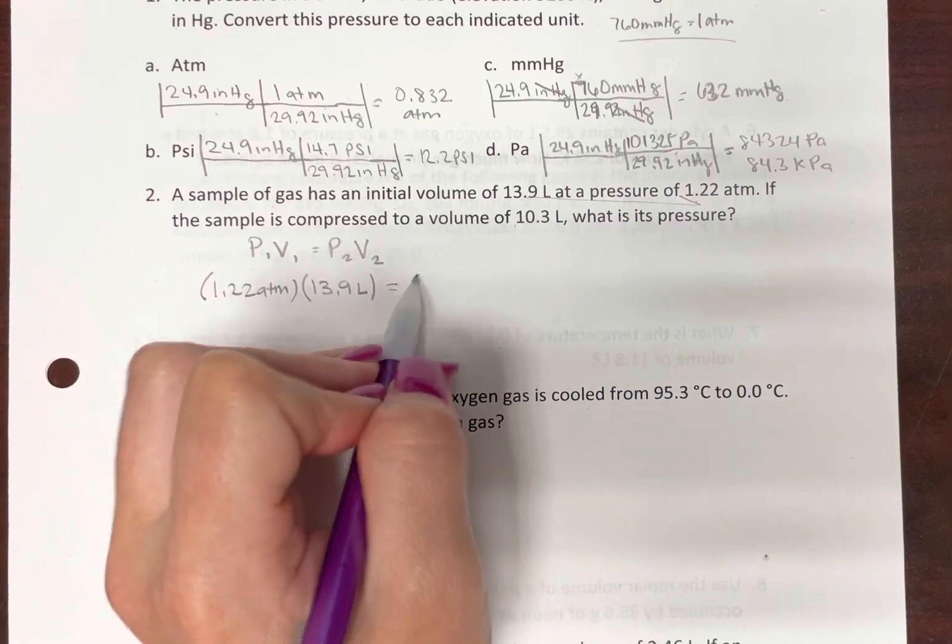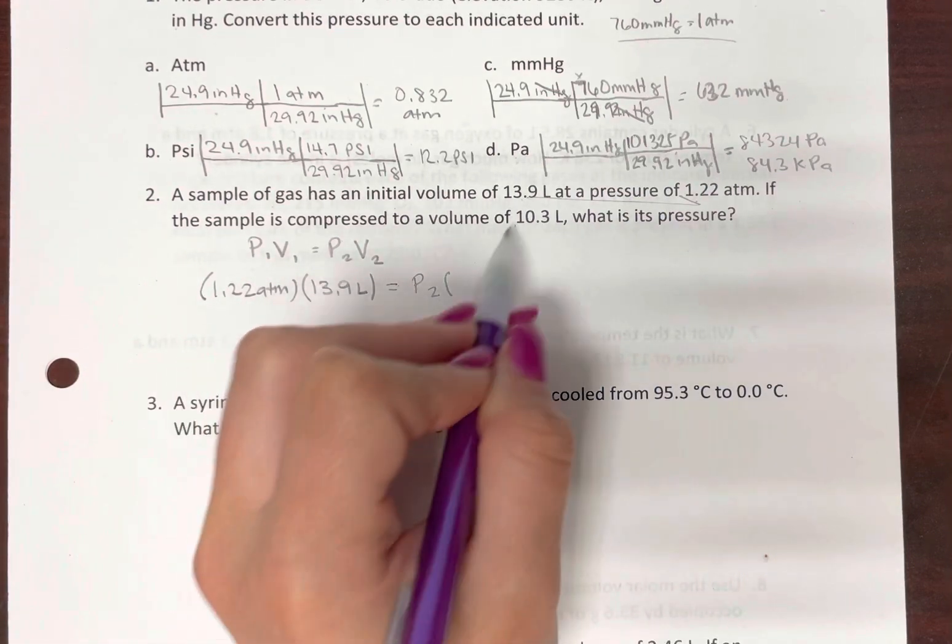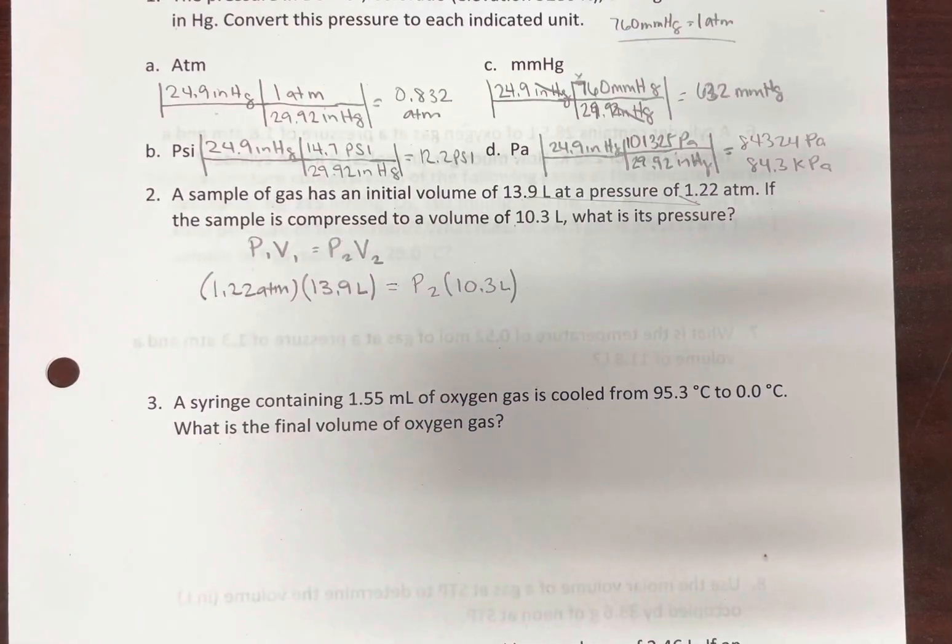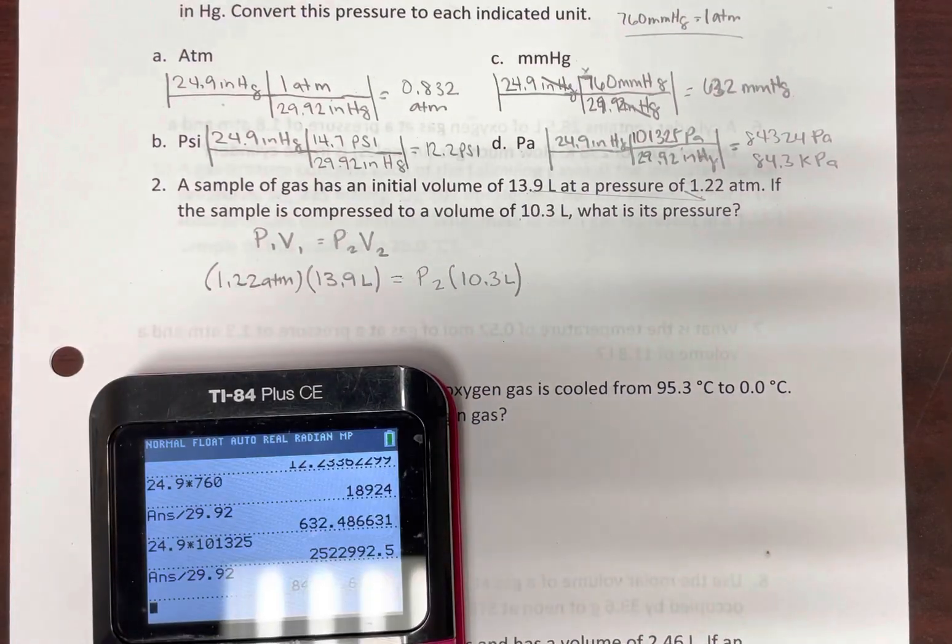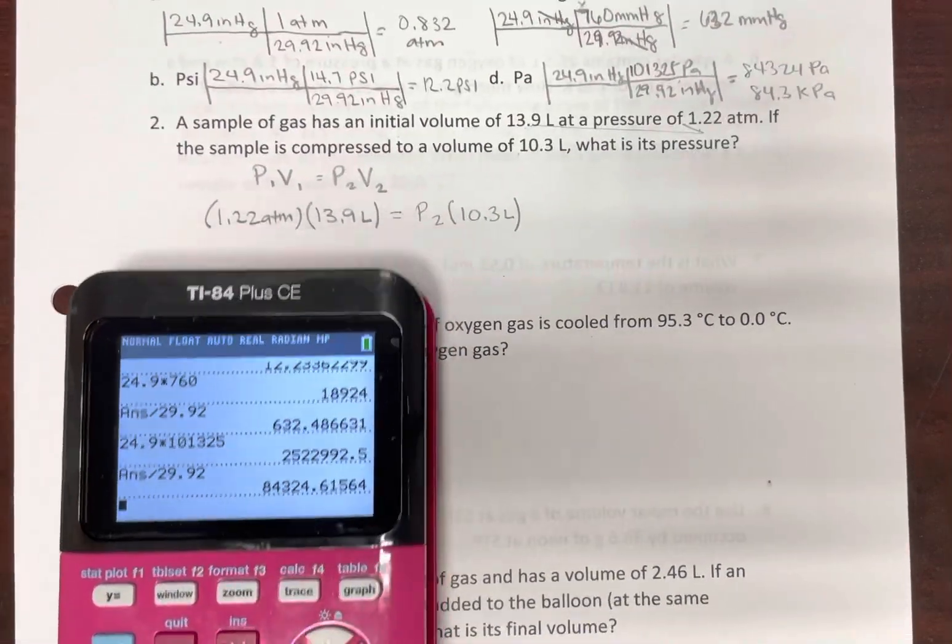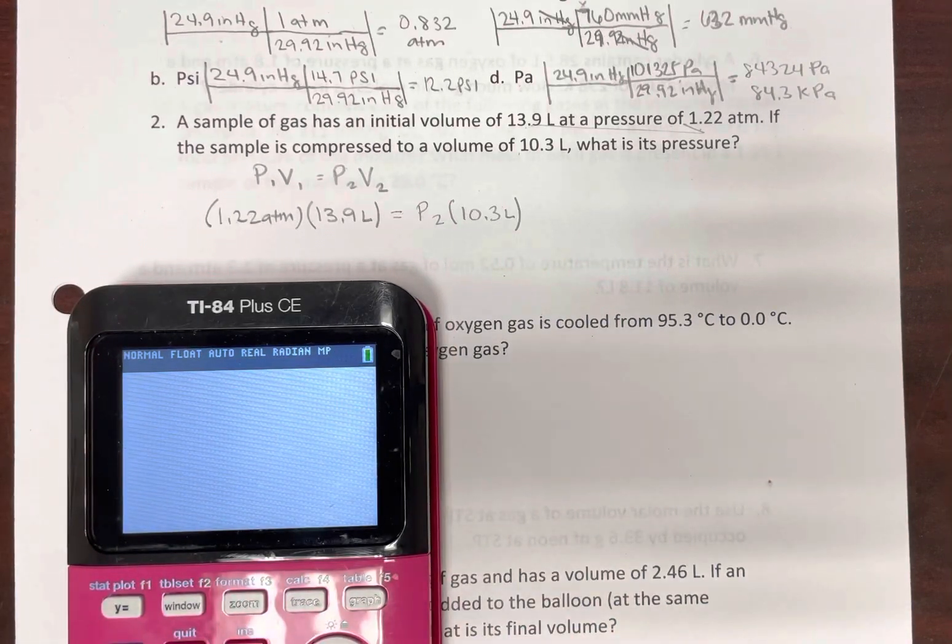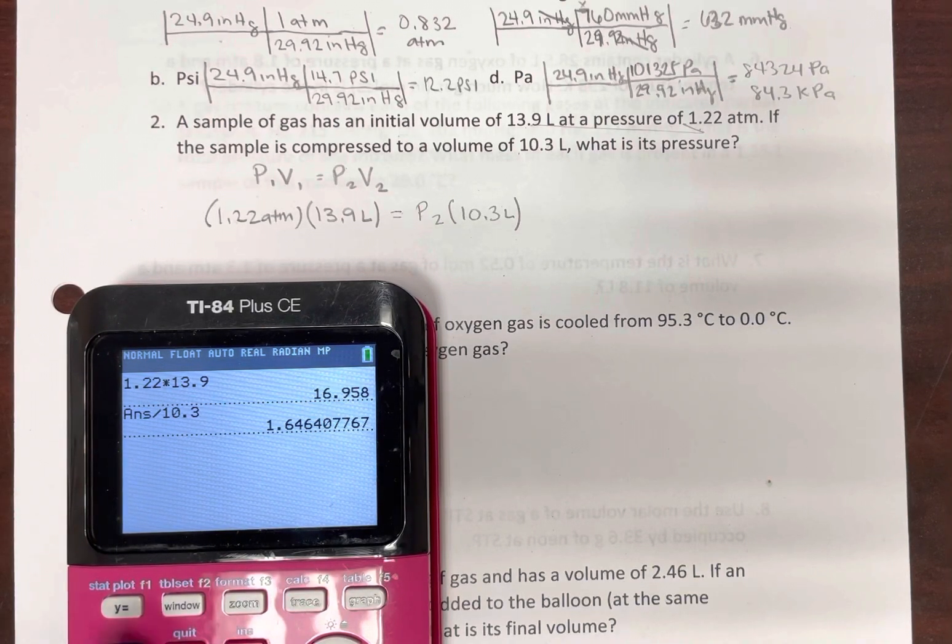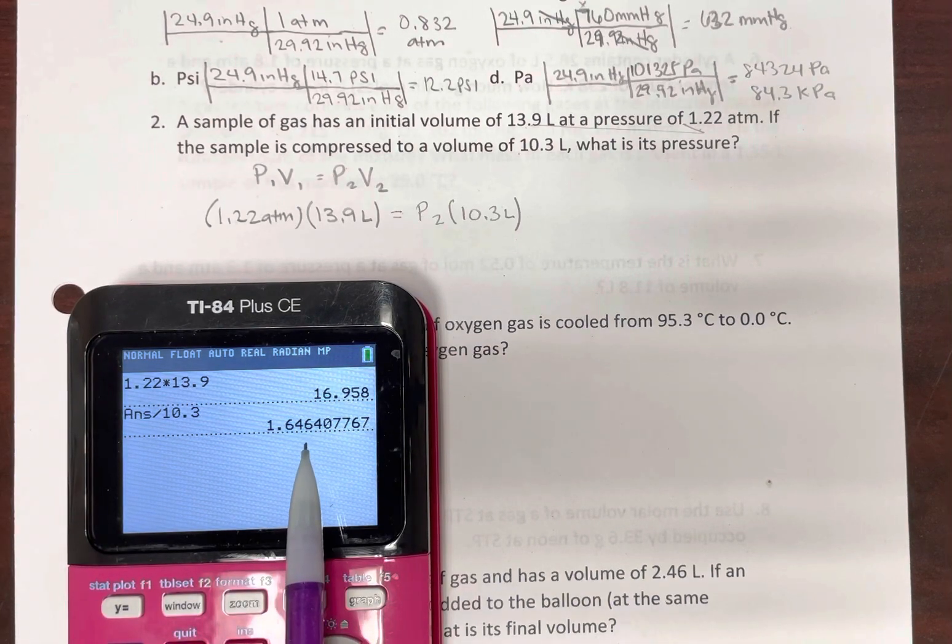So our second pressure, we don't know, that's what we're solving for. V2, 10.3 liters. It's just a matter of cross multiplying and dividing to solve the proportion here. So 1.22 times 13.9 divided by 10.3. So here, let's round to 1.65 atmospheres.